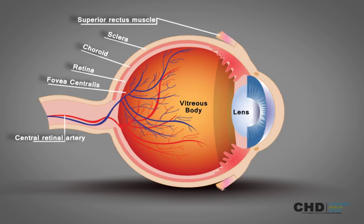The central retinal artery refers to a blood vessel inside the eye. It gives crucial nutrition to the retina. The optic nerve, also referred to as cranial nerve 2, transmits visual data from the retina to the brain.